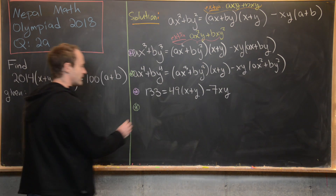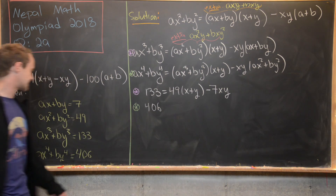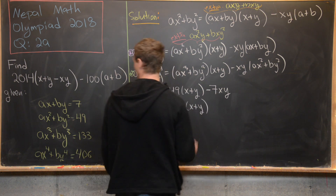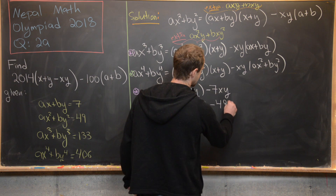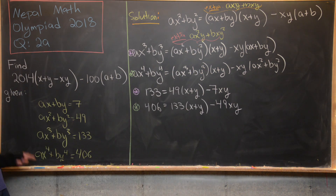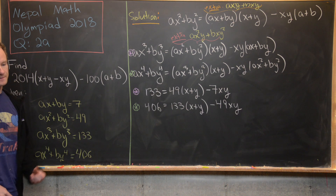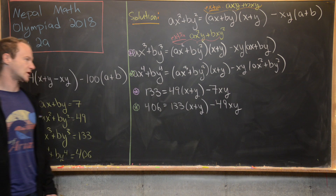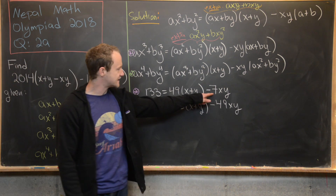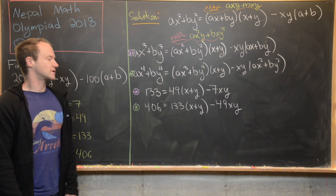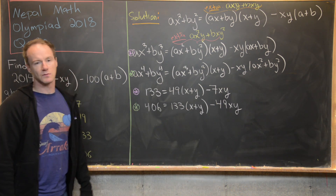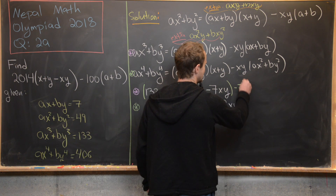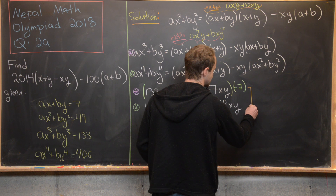The green equation is 406 = 133(x + y) - 49·xy. To solve this system, notice that 49 is a multiple of 7. So the easiest approach is to multiply the purple equation by -7 and add it to the green equation, which will cancel the xy terms.